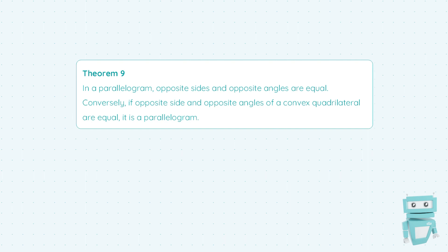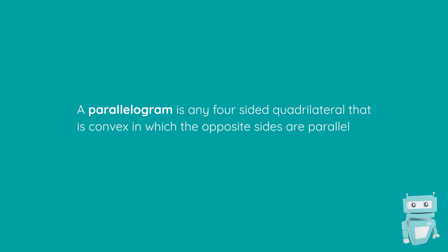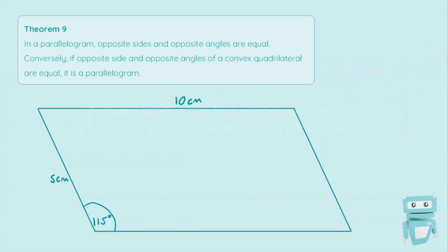To explain this first sentence: a parallelogram is any four-sided quadrilateral that's convex in which the opposite sides are parallel. Convex simply means that it's a closed shape — so a quadrilateral with four corners that is closed, such as the parallelogram we have here which we're going to come on to in a moment.